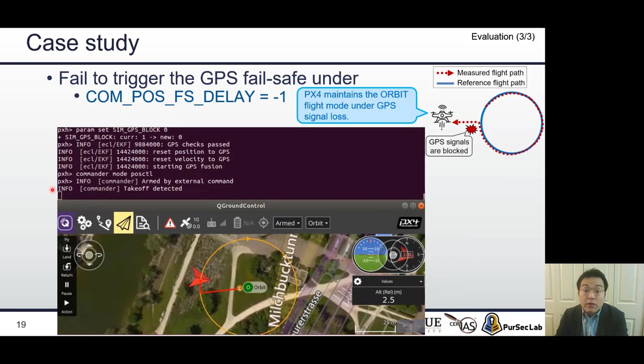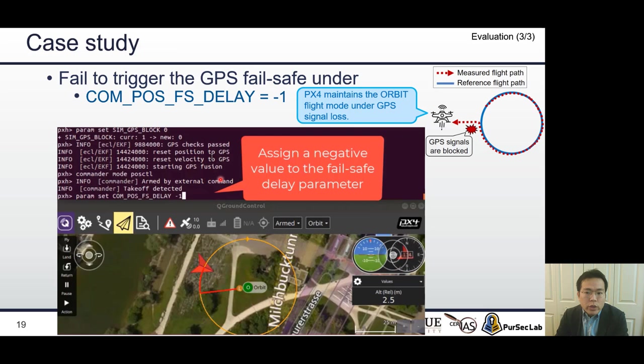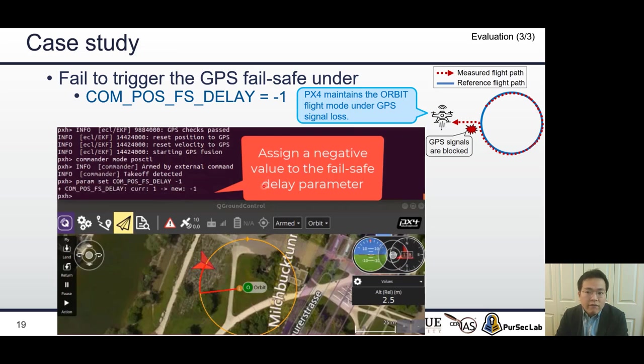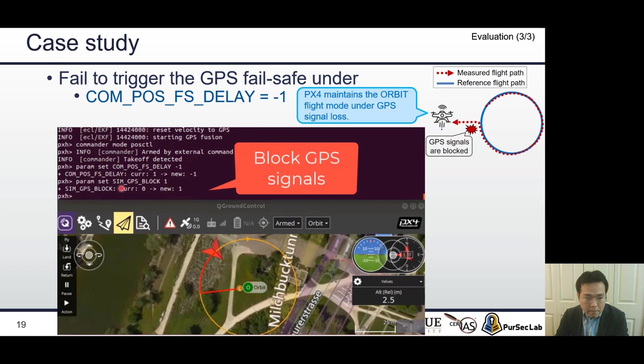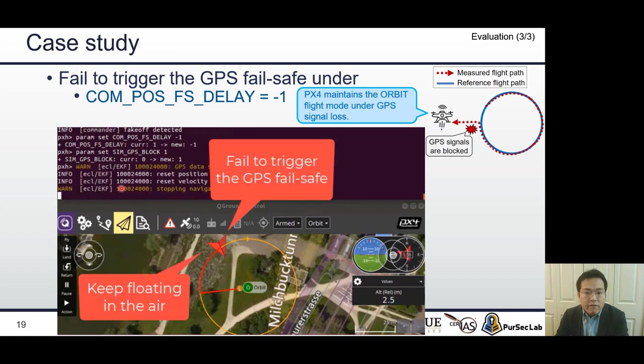However, PGFUZZ found that PX4 failed to trigger the GPS failsafe under some different configuration settings. First, we assign a negative value to the failsafe delay configuration parameter. Second, we also block GPS signals on the simulator. However, the vehicle keeps floating in the air and does not trigger GPS failsafe.